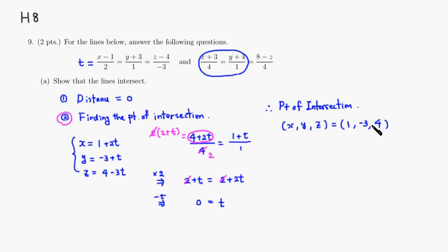So therefore, we found the point of intersection, which means that, hence, they intersect. I hope that this was clear. If you want, try the first method, see if you can get the distance equal to 0.